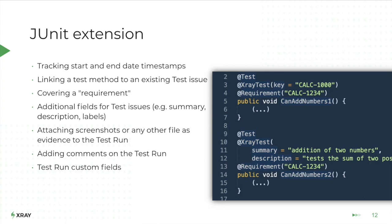We also implemented a JUnit extension for JUnit itself. Whenever executing JUnit tests, if you use our extension, you can augment the test case methods with information relevant for X-Ray. When JUnit generates the XML report, it will include this additional information that X-Ray can later use — for instance, specifying the test case summary or description, or associating test cases with a given requirement or user story. This was something that was lacking in JUnit compared with other formats we support.